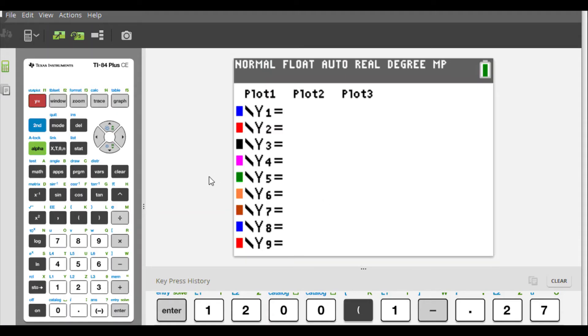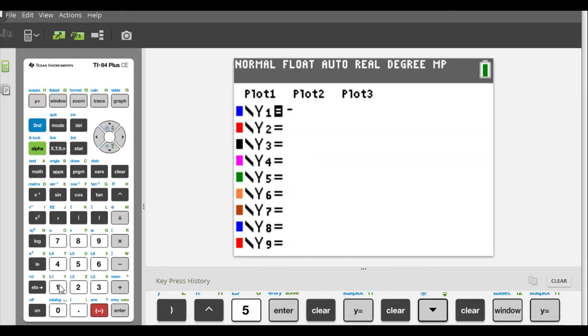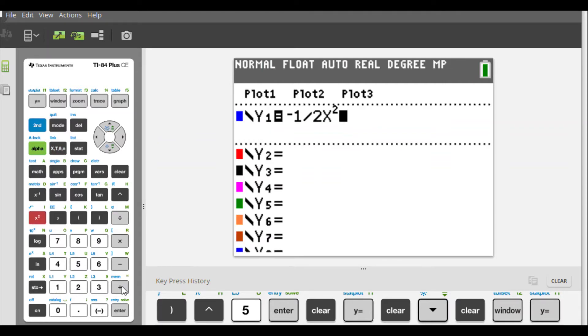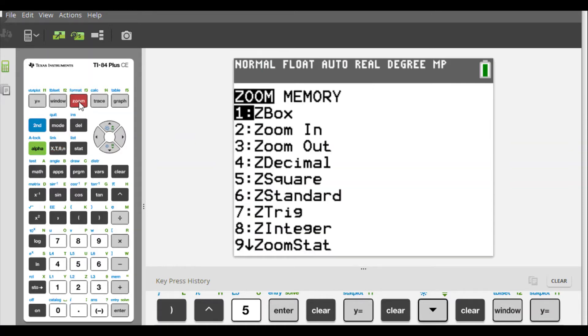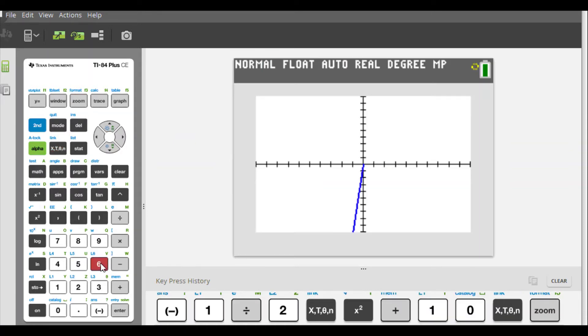So in our graphing calculator, we're going to type in our first equation. So that would be negative 1 half x squared plus 10x. Right? And if we try to graph this in a regular window, or zoom 6 if you will, we find that we don't get everything here.